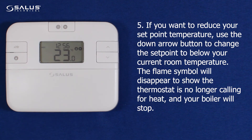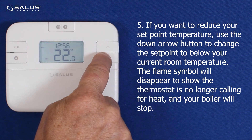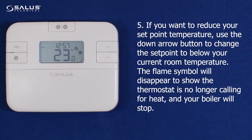Step 5: If you want to reduce your set point temperature, use the down arrow button to change the set point to below your current room temperature. The flame symbol will disappear to show the thermostat is no longer calling for heat, and your boiler will stop.